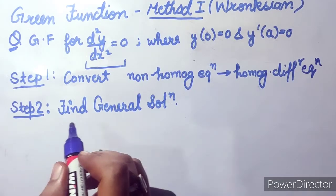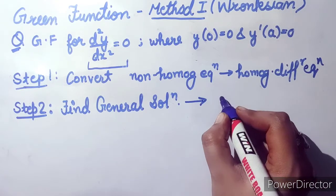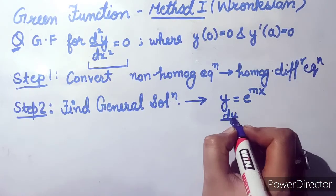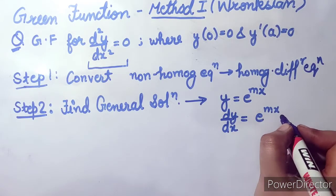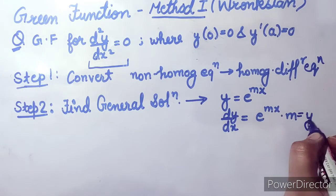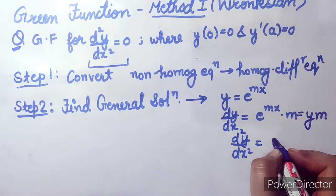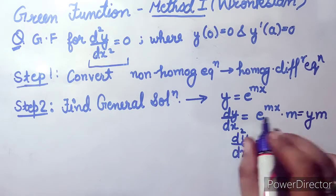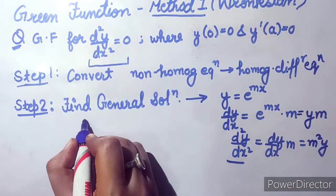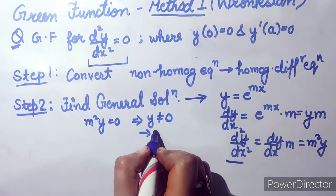Step two is to find the general solution. For any differential equation, we consider y = e^(mx). Differentiating both sides gives dy/dx = e^(mx) · m = my. Differentiating again gives d²y/dx² = m²y. Substituting into our equation gives m²y = 0, and since y ≠ 0, this implies m² = 0.